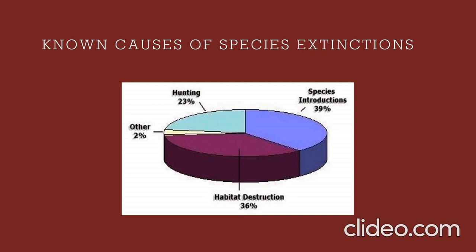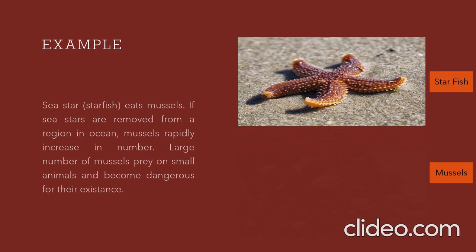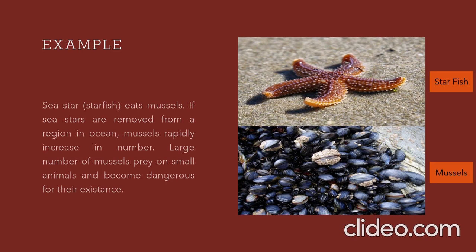A species is called endangered when it is at risk of extinction in the future. Known causes of species extinction include: hunting (23%), species introduction (39%), and habitat destruction (36%). For example, sea stars (starfish) eat mussels. If we remove sea stars from a region, mussels grow rapidly, which becomes dangerous for different small animals.